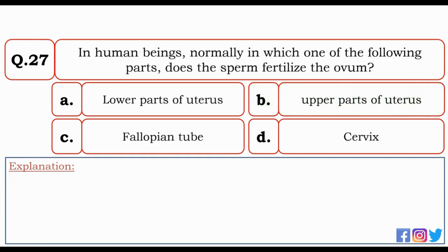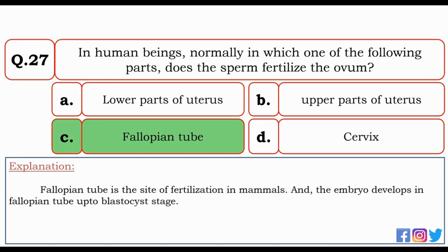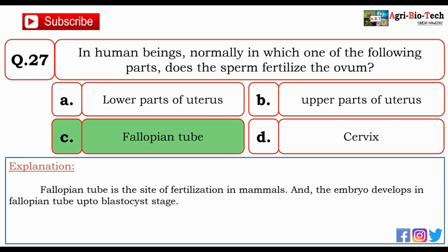Next question: in human beings, normally in which one of the following parts does the sperm fertilize the ovum? Options: lower part of uterus, upper part of uterus, fallopian tube, or cervix. The correct answer is C — fallopian tube. The fallopian tube is the site of fertilization in mammals, and the embryo develops in the fallopian tube up to the blastocyst stage.